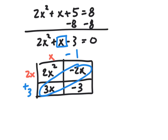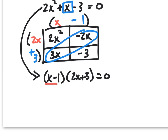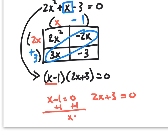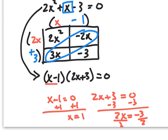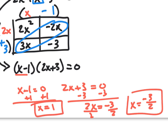The factoring is correct, so the factors are (x minus 1) and (2x plus 3), set equal to zero. For x minus 1 equals 0, adding 1 gives x equals 1. For 2x plus 3 equals 0, subtracting 3 gives 2x equals negative 3, then dividing by 2 gives x equals negative three halves. So x equals 1 and x equals negative three halves.